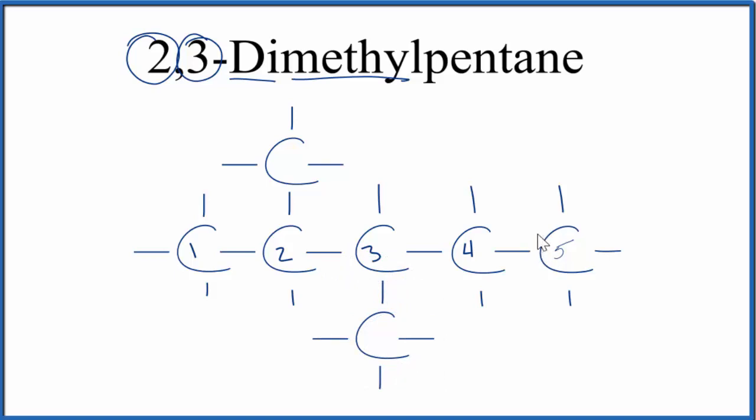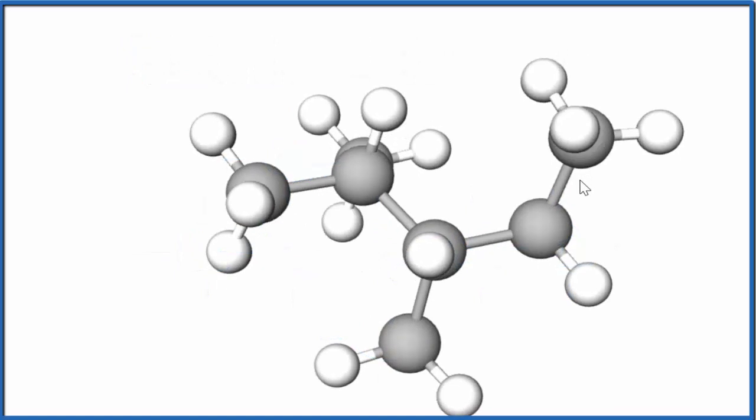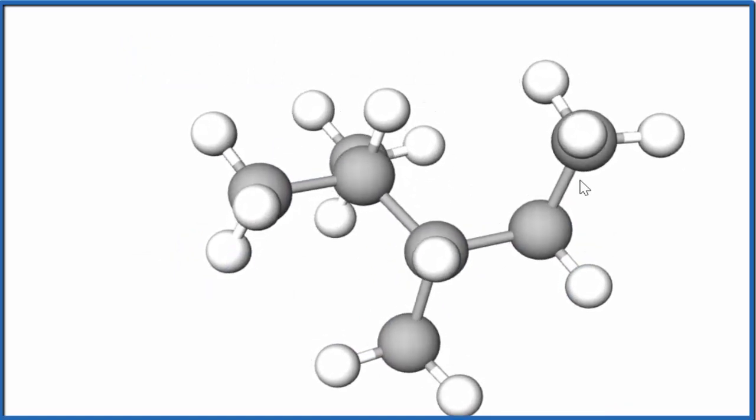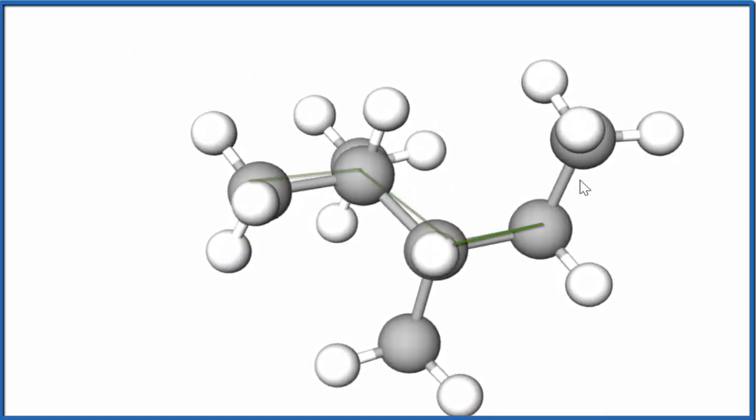Let's look at this in three dimensions briefly. Here we have dimethylpentane. The grays or blacks are the carbons, and the whites are the hydrogens.